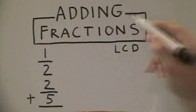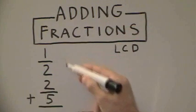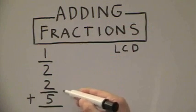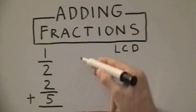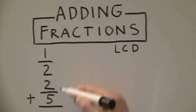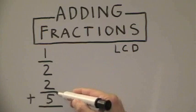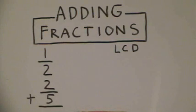In this video tutorial, we're going to look at adding fractions with unlike denominators. For one-half and two-fifths, we can see that the denominators two and five are different. Our job is to make them the same.